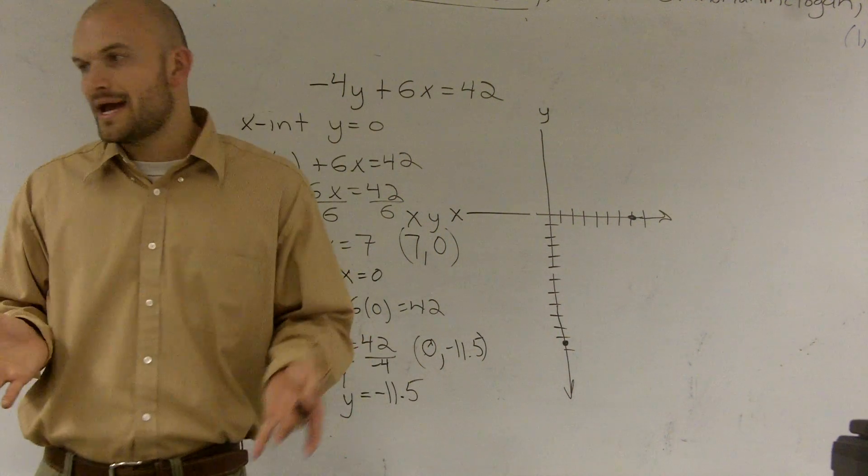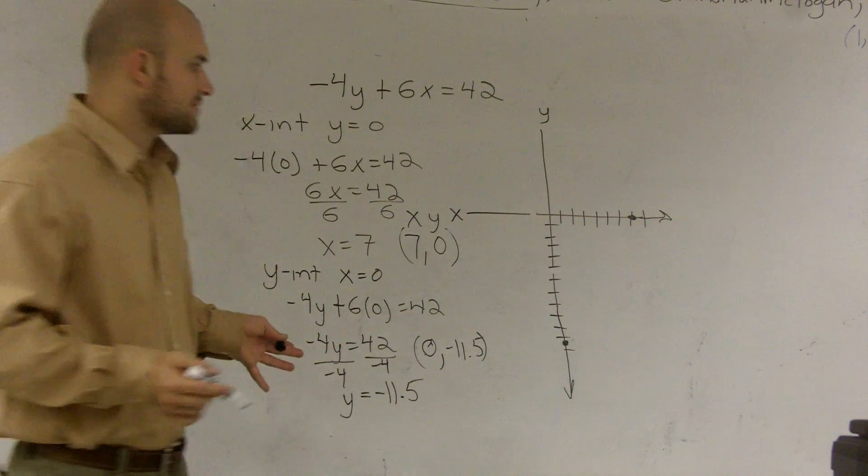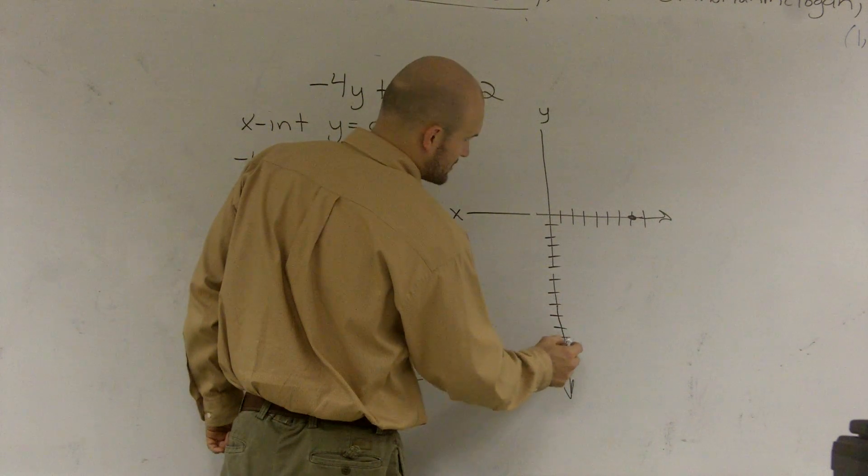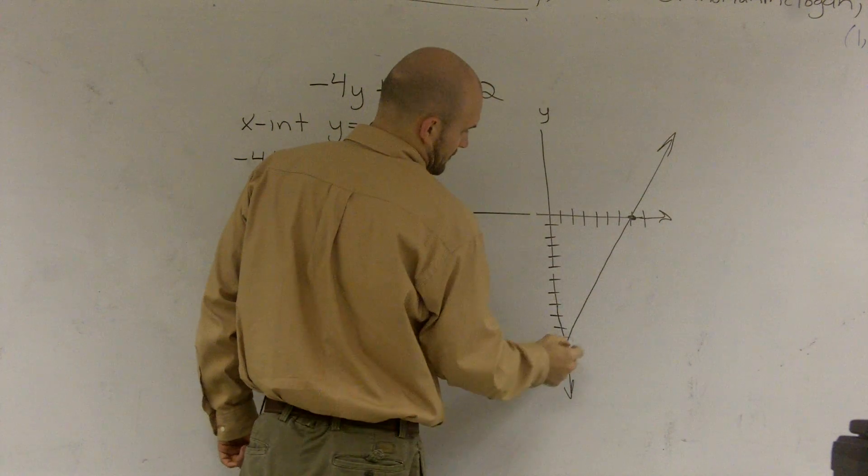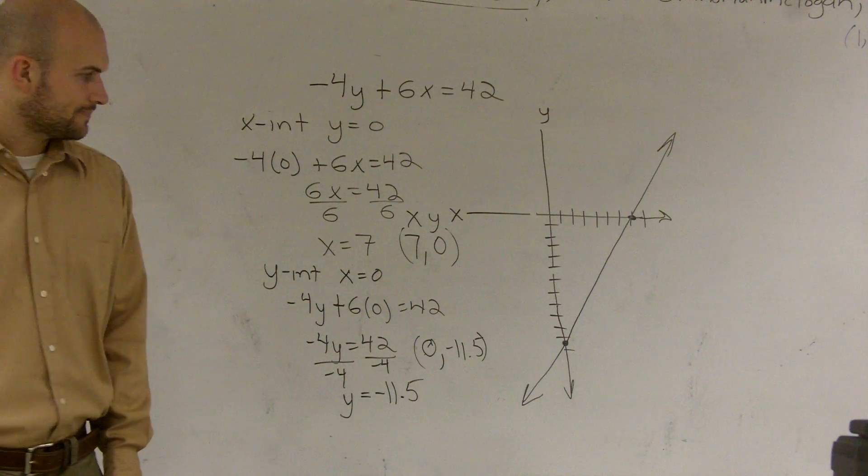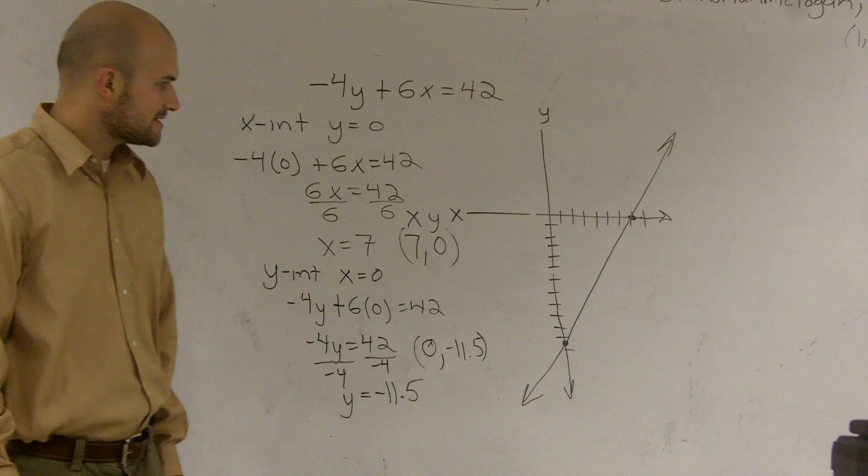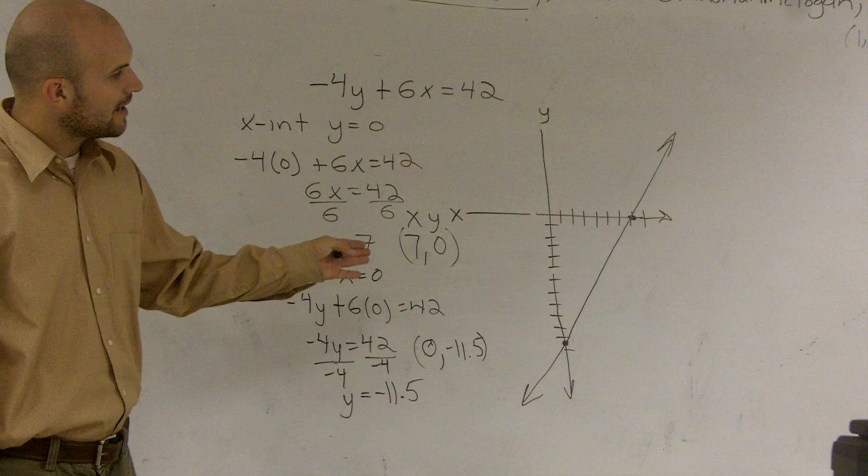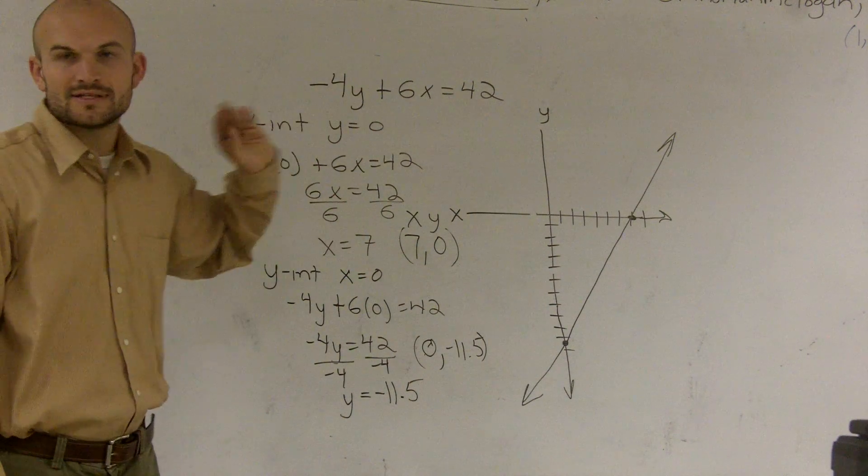And then to graph this, I know my x and my y-intercept are. So to find the graph, I just need to connect these two points. And I just need to connect these two points. And then I've graphed my line using x and y-intercepts.